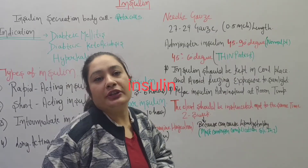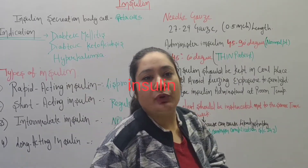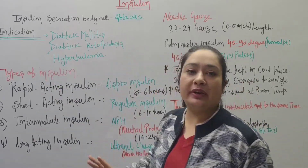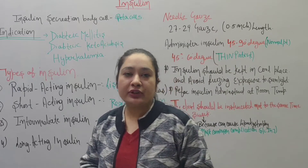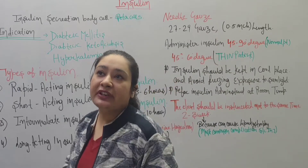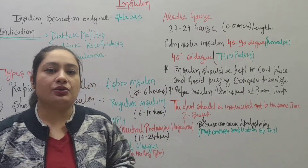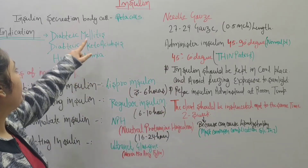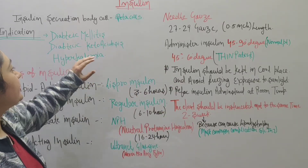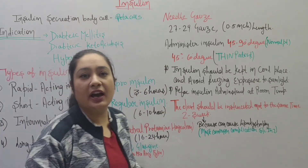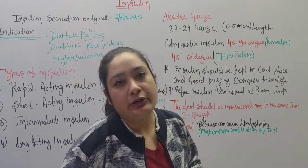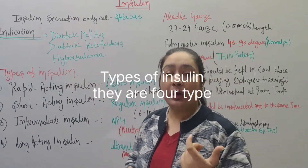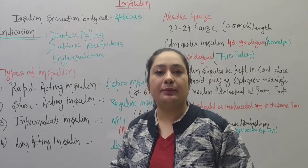As you all know, insulin is normally present in our body. But there are some conditions where we give artificial insulin as medication, such as diabetes, ketoacidosis, and hyperkalemia — in these cases we give artificial insulin to the patient.